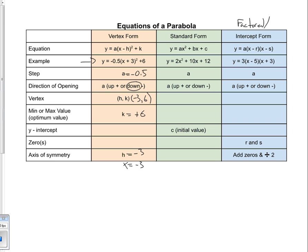In the middle we have the standard form of the equation, which is also relatively useful. Standard form will give you the a value and the step — in this example, the a value is positive 2, so the parabola opens up. However, standard form alone doesn't tell us the vertex, the min or max, or the optimum value. What it does give you directly is the c value, the y-intercept. In this case, the y-intercept is at positive 12.